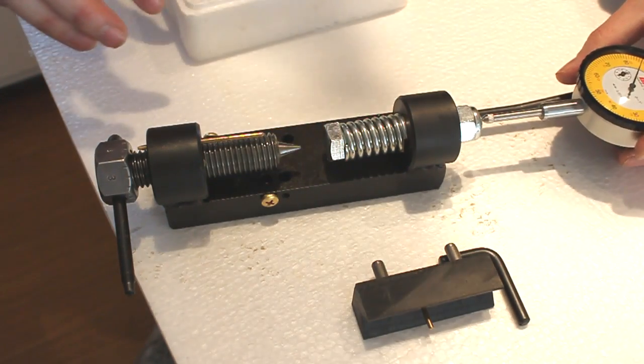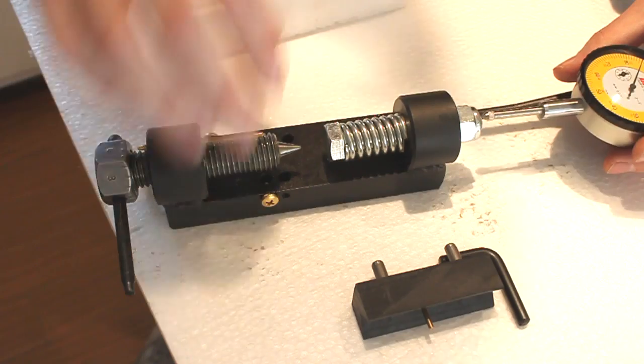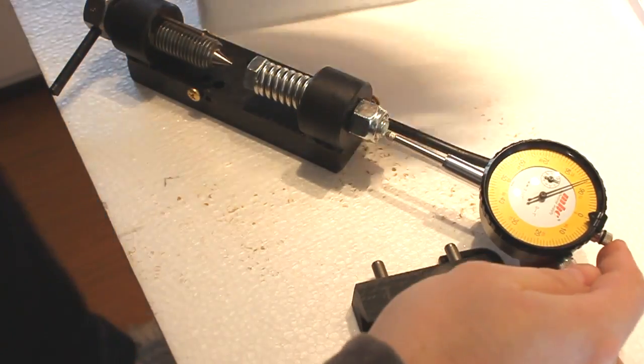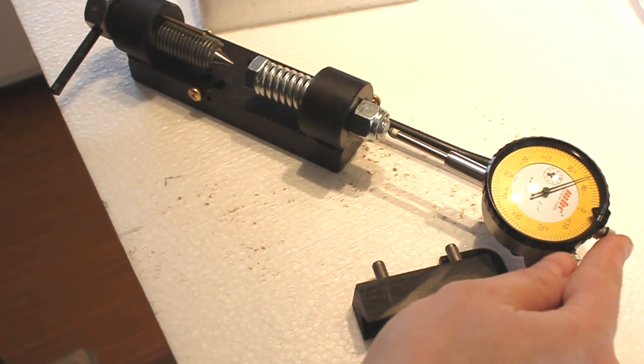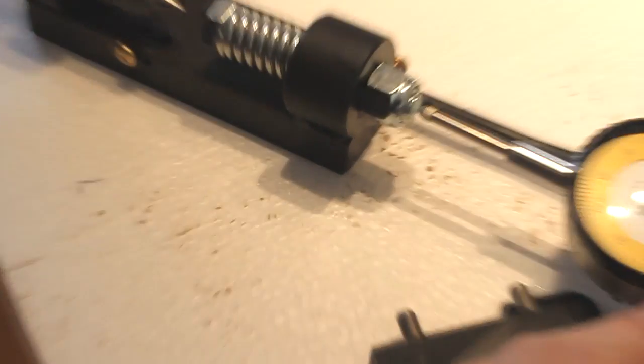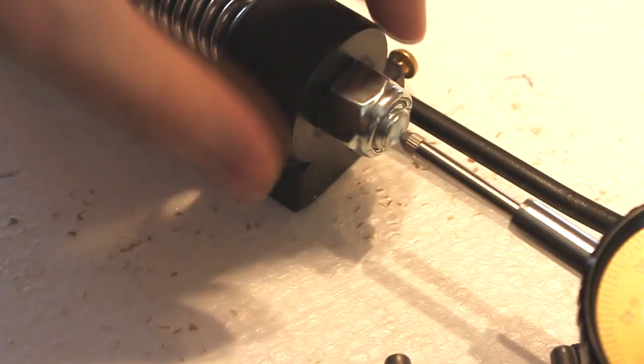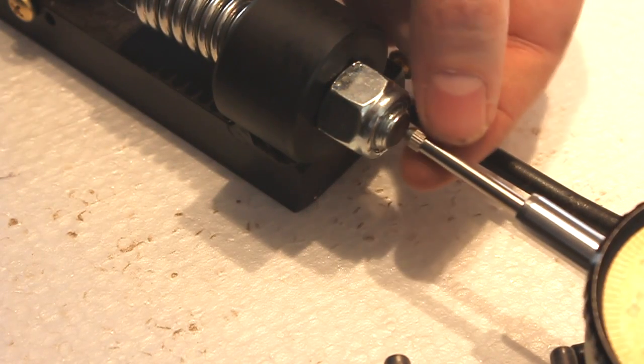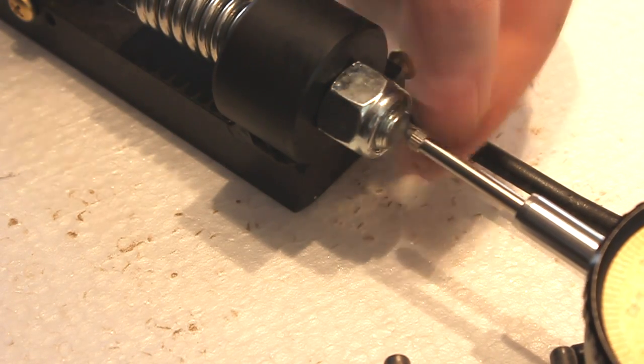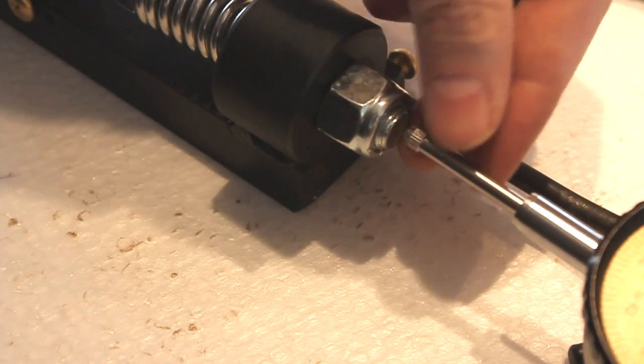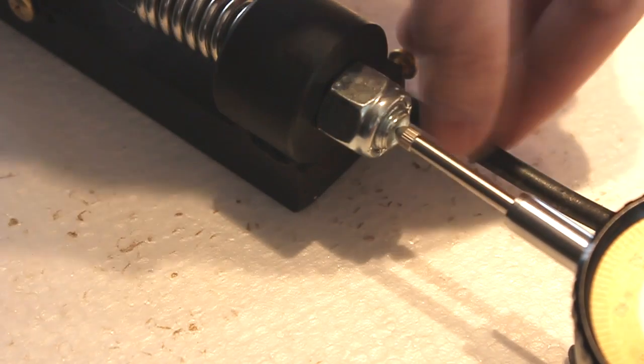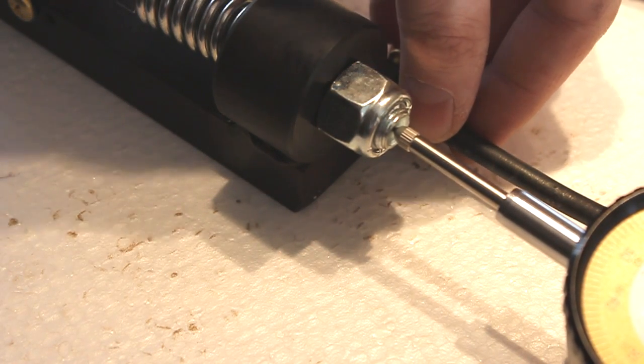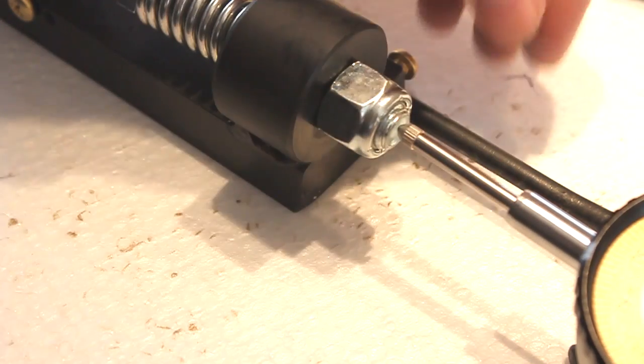So when I slide that in there's a small indention or depression in the end of this bolt. And the instructions say to have the little point here of the dial indicator touching in the center of that and slightly depressed. See how there is a little bit of load put on that.